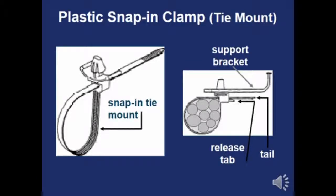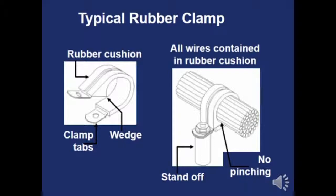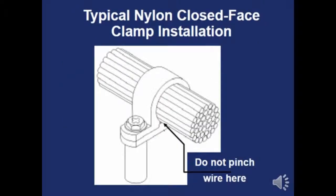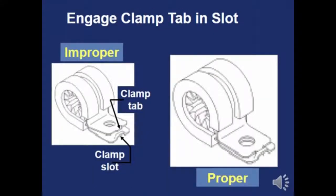Plastic snap-in clamps should not be used in high vibration or high heat areas — they're like clamp zip ties and could come loose with vibration. Rubber clamps sometimes have a wedge, so make sure there's no pinching as wires pass through. Make sure everything is installed in its proper place and slot.